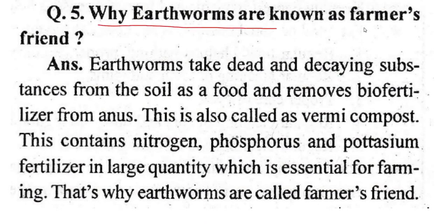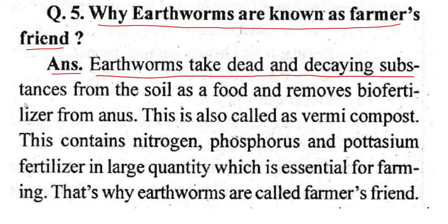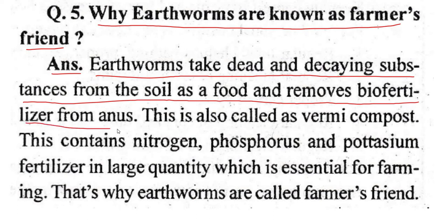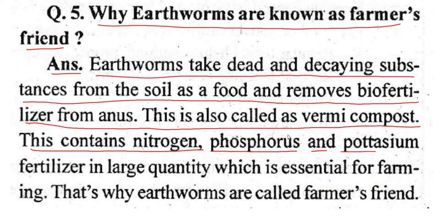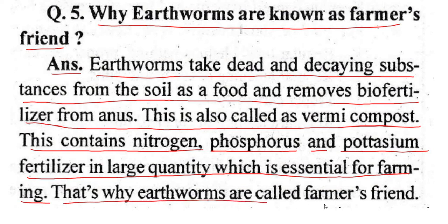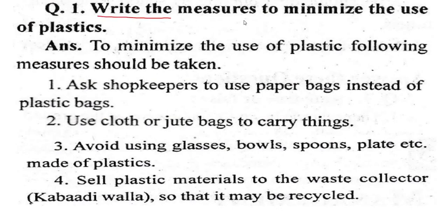Question: Why are earthworms known as a farmer's friend? Answer: Earthworms take dead and decaying substances from the soil as food and release bio-fertilizer from their bodies. This is also called vermicompost. It contains nitrogen, phosphorus, and potassium fertilizers in large quantities, which are essential for farming. That is why earthworms are called a farmer's friend.